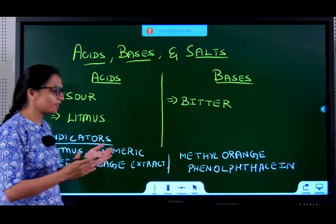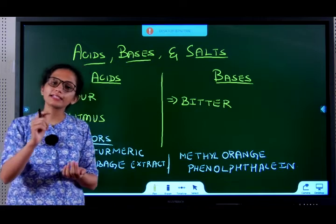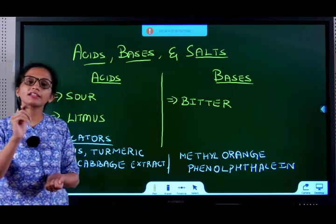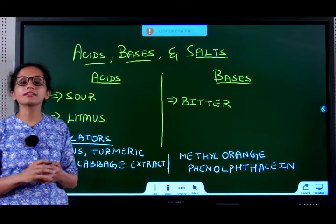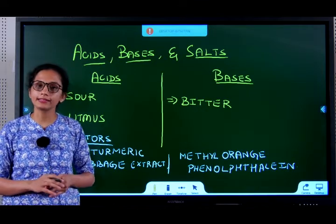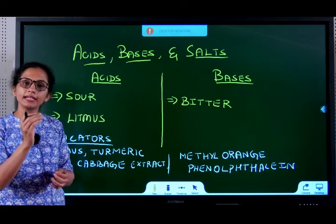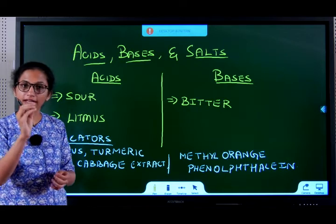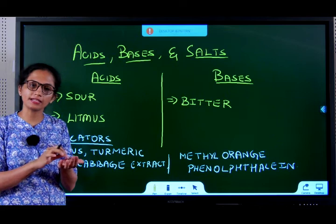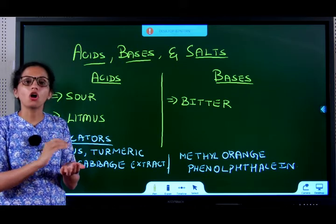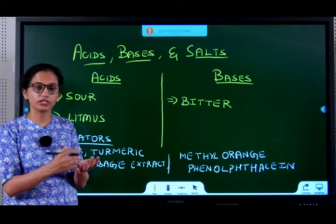If I give you a substance and ask you to test whether it is an acid or a base, how do we do that? We use something called indicators. Indicators are chemical substances or extracts that, when added to your substance, show either a color change or an odour change.